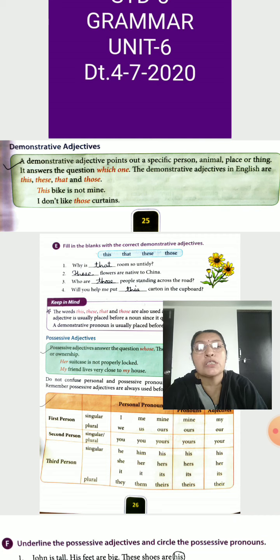We use those for plural things, person, animal. Understand? So, 'this' and 'that' for singular, and 'these' and 'those' for plural.